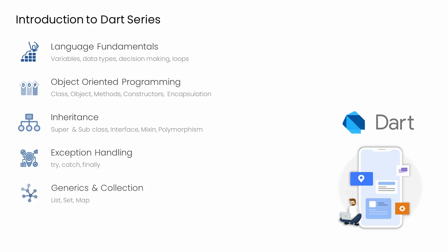We'll move towards generics and collections, which is very important in DART and Flutter application development for managing your data efficiently. Here we'll examine list, set, and maps.